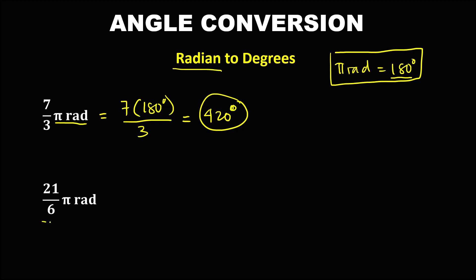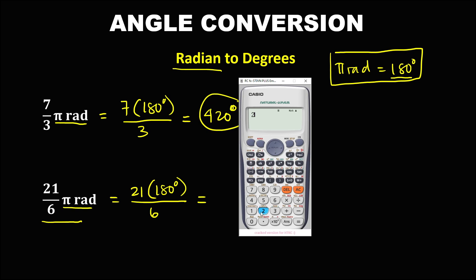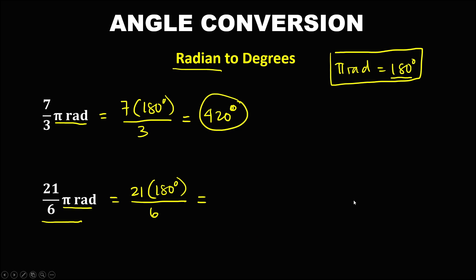For the next given, 21π/6 rad, replace π rad with 180 degrees. This becomes 21 times 180 degrees divided by 6. Computing: 21 times 180 divided by 6 equals 630 degrees.